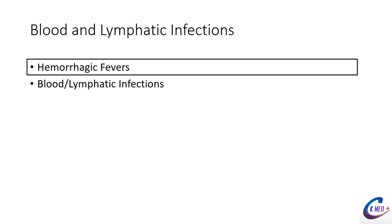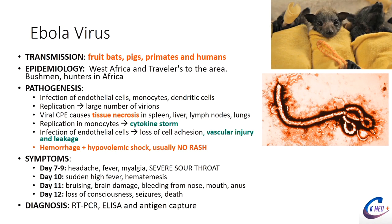Now we'll discuss hemorrhagic fevers. A couple are high yield and I'll breeze through some others to get to the blood infections. Ebola virus — you've heard about it in the news; there was a major outbreak in West Africa where there was significant hysteria, with people fleeing and not getting help. Transmission occurs from fruit bats, pigs, primates, and humans who have contracted the virus.